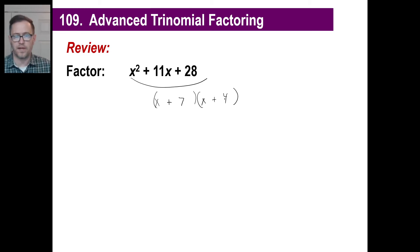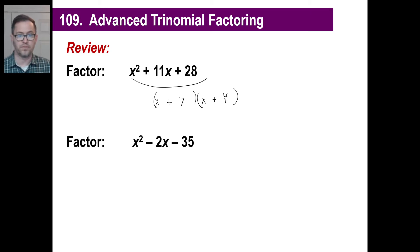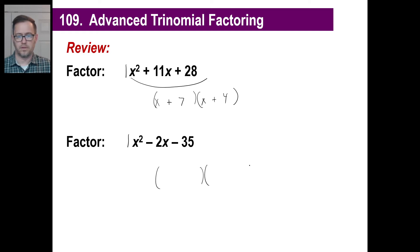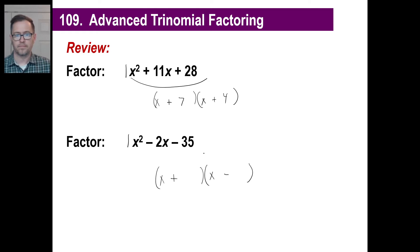We're going to do something similar, just with a couple of different steps. We're used to doing trinomials with a lead coefficient of 1 — that's 1x squared. Let's do this one: what two numbers add to give me negative 2 and multiply to give me negative 35? Since the product is negative, we need a plus and a minus — that's 5 and negative 7.